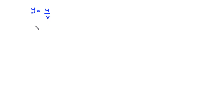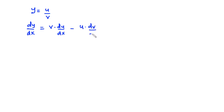Given that y is a function of x and y is equal to u divided by v, then the derivative of y with respect to x is given by v times du/dx minus u times dv/dx, all divided by v squared. So if you have a function y equals u divided by v and you want to find the derivative, you use this formula. Now let's take some examples.